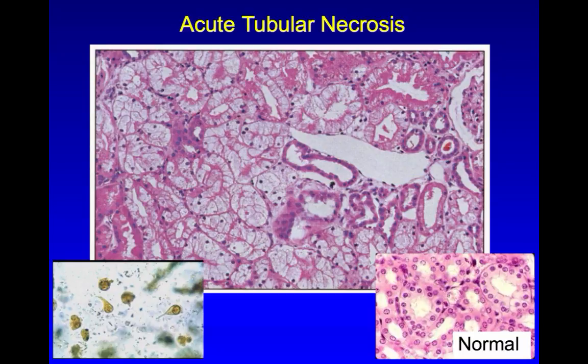In ATN, tubular cells have died from ischemic or toxic injury, dropped off of the basement membrane, and been excreted in the urine. So compared with normal, you don't see much in the way of nuclei or cells until the cells regrow.